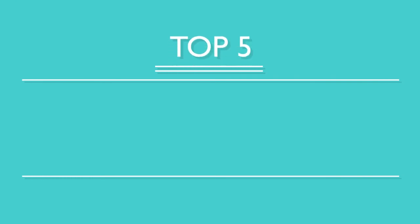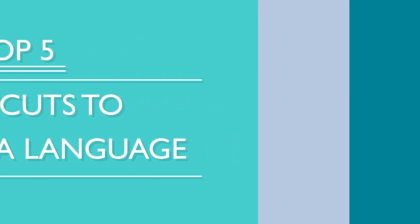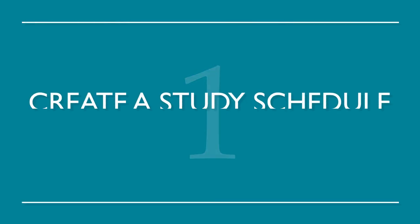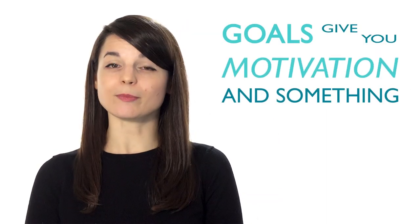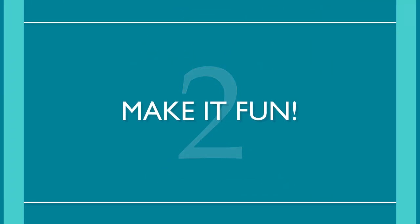You've decided to study a new language — so now what? You want to become fluent fast, right? Here are the top five shortcuts to learning a language. Number one: create a study schedule and set some goals. Many language learners are unorganized — creating a schedule frees up time to study consistently, and goals give you motivation and something to strive for. Number two: make it fun. If you make your study time enjoyable, you'll be more inclined to study.